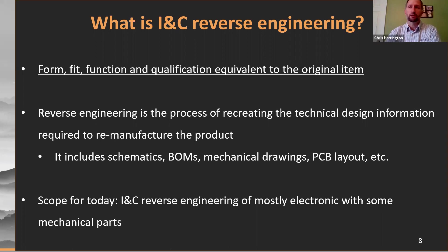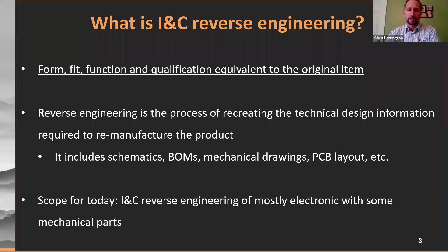We also need procedures, qualification documents, and procedures as well. The scope of today's discussion is I&C reverse engineering, which involves mostly electronic components with some mechanical aspects. They vary from full chassis to gear boxes — we'll show a couple of examples of those — or maybe a circuit board the size of a piece of paper, or a host of circuit boards with 30, 40, 50 components on them.